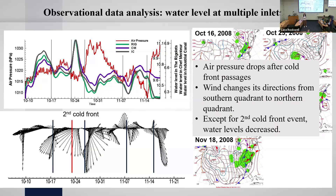An audience member asked whether the change in air pressure from 1010 to 1030 is a large variation. Yes — if you look at the red line showing air pressure, there is a big change. You can notice the large changes in air pressure after the third cold front passage — it increases a lot. That is the major effect from cold front passages, before and after.